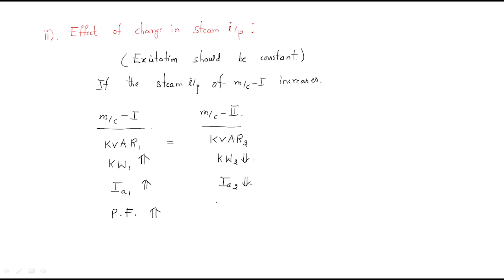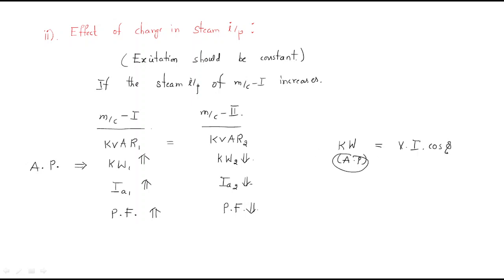When kW increases, automatically the power factor value increases. We can write the active power as P = VI cos φ. Whenever active power increases, the power factor value also increases, armature current increases, and the voltage value remains constant.